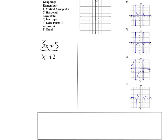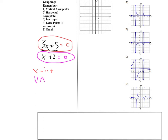A student once drew a really helpful color-coded diagram for rational functions. When you take the numerator and set it equal to 0, that gives the x-intercept. The denominator set equal to 0 gives the vertical asymptote. Dividing the constant numbers gives the y-intercept. Dividing the leading coefficients gives the horizontal asymptote — though that only works when the degrees are equal. This lets you see all four key pieces of information at once.